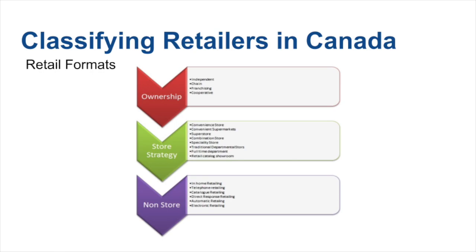We also have convenience supermarkets, which are exactly the same as a convenience store but offer a broader assortment of items. A superstore or combination store are large store formats, such as what Dominion has in many parts of Atlantic Canada, offering not only groceries but dry goods as well. A specialty store specializes in one thing — it could be a knick-knack store, electronics, or wood. Traditional department stores have various departments that people can shop through — stores within stores; Walmart is a good example. Retail catalog showrooms are where you look at the product in a catalog or online and walk into the store to actually get it.